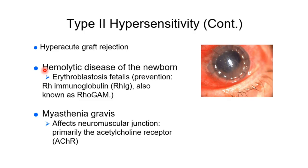Hemolytic disease of the newborn is based on Rh factor, identified by the D-type protein found on plasma membranes. We named it after rhesus monkeys because that's where the testing was done.